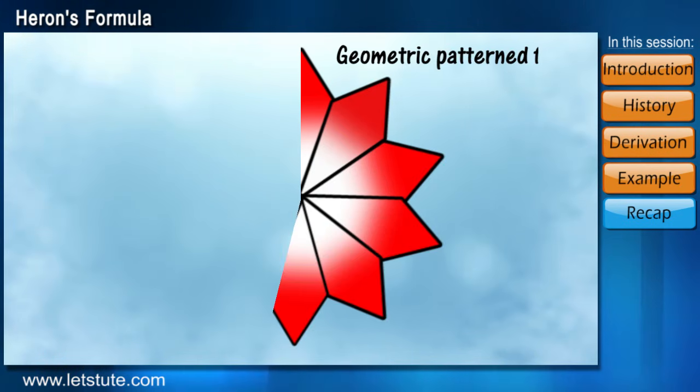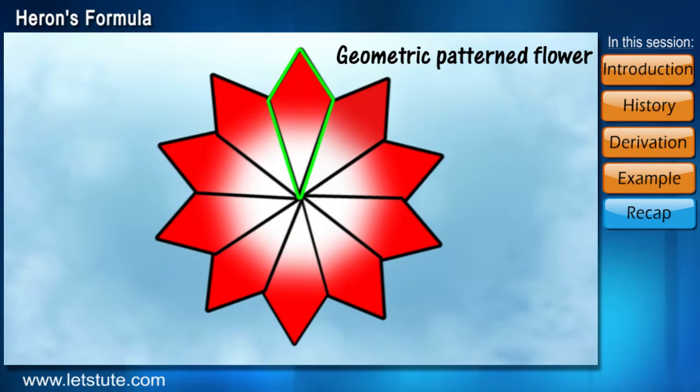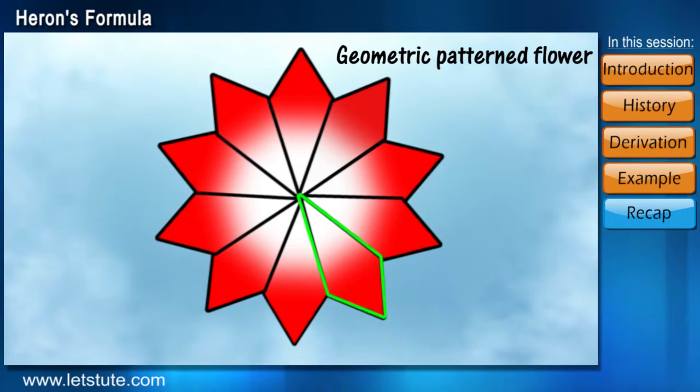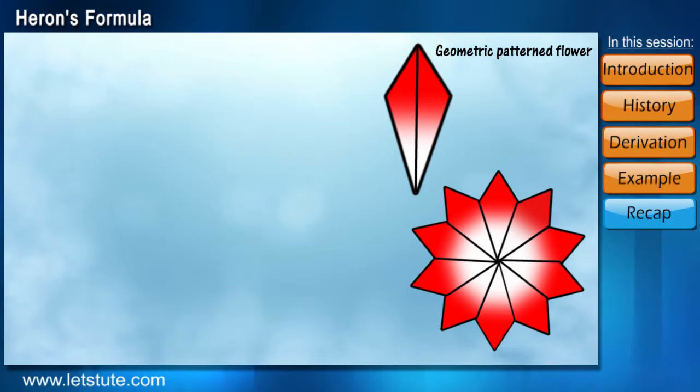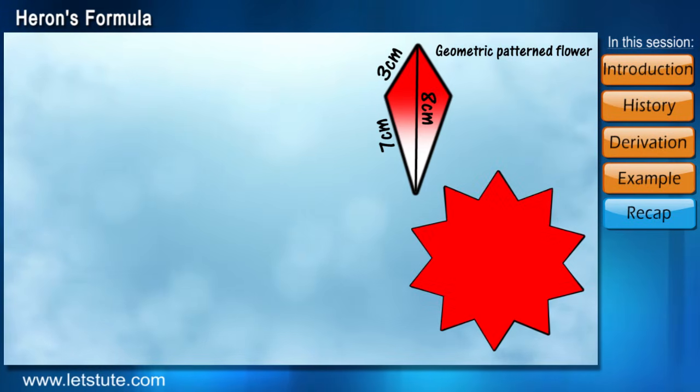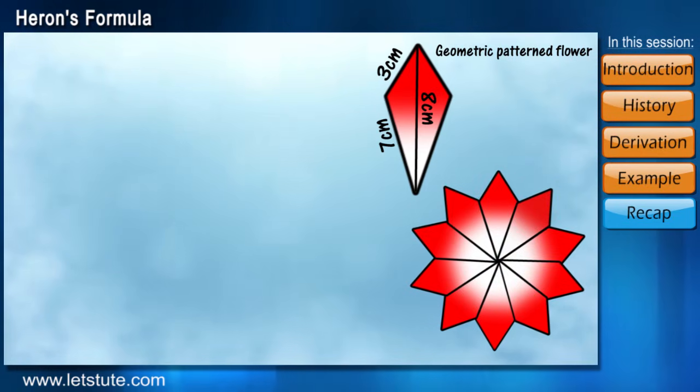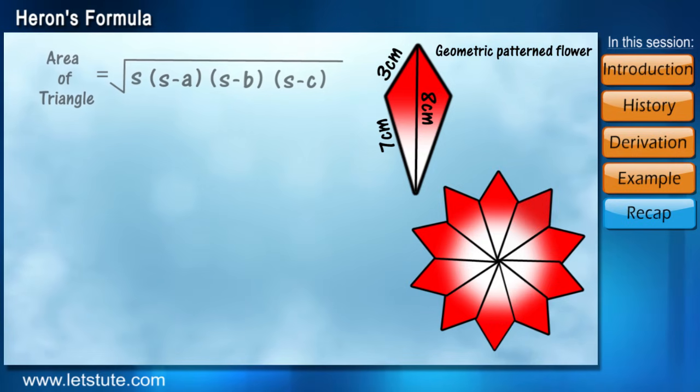Let's have a look at one interesting example of how we can calculate the area of quadrilaterals using Heron's formula. Suppose there is a geometric patterned flower. Each of its petals is the same and is of kite shape with length of sides as mentioned. We have to calculate the area of the flower. This may look complicated but it's very simple. All we have to do is find the area of one half of the petal using Heron's formula.